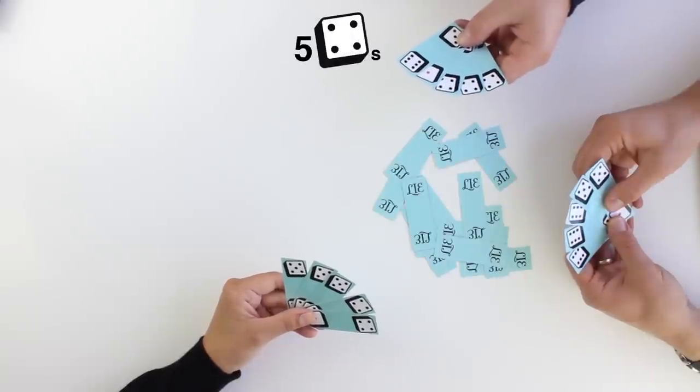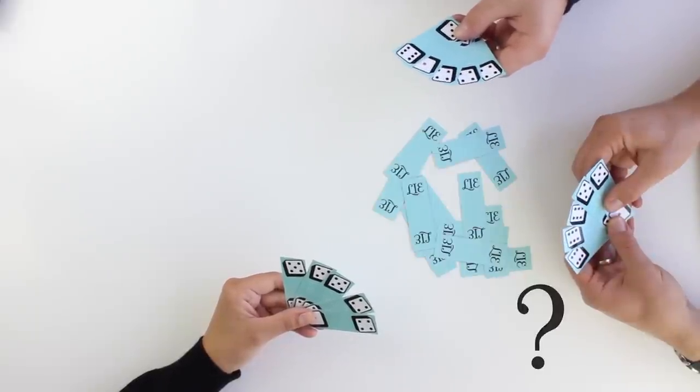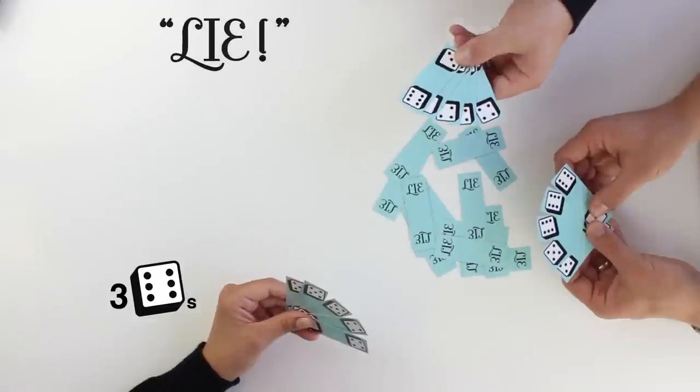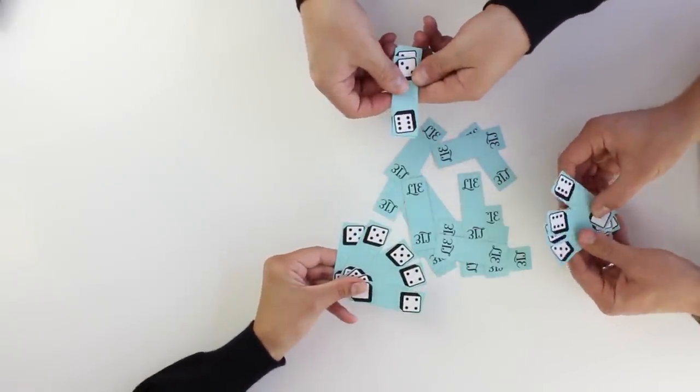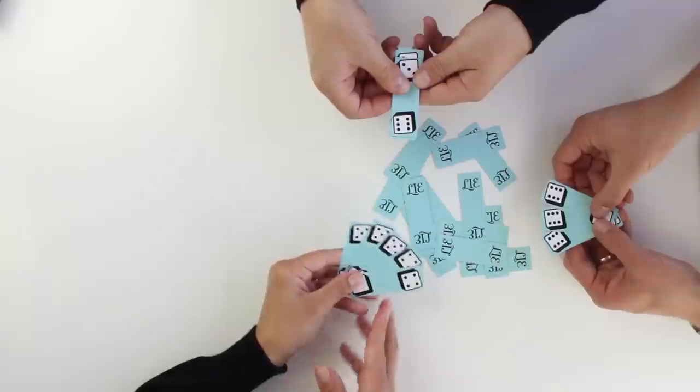If the active player chooses to bid, then the next player in clockwise order takes a bidding turn. If the active player chooses to challenge the previous bid, then all players show their hands. Players count only the die numbers on top of the cards. A bid challenge will result in a winner and a loser.